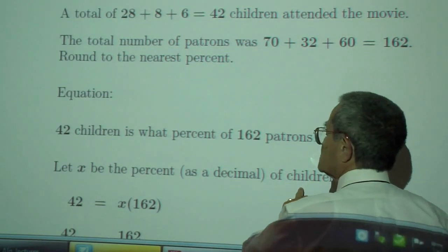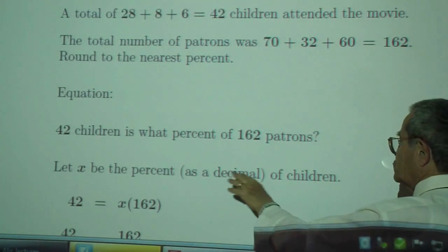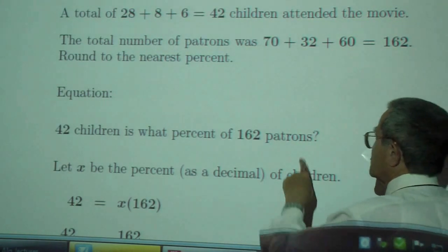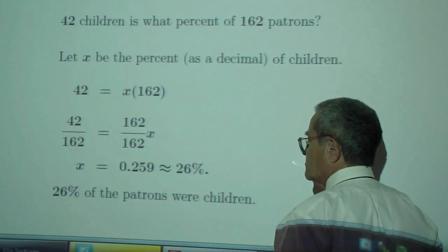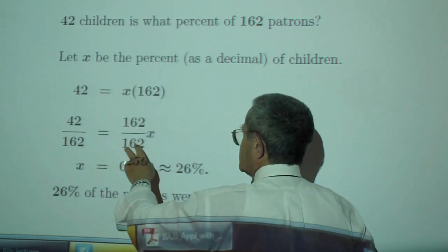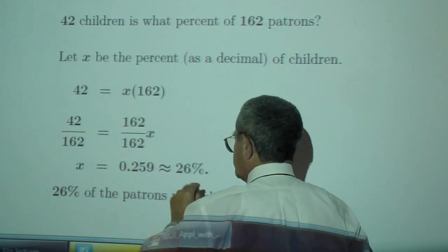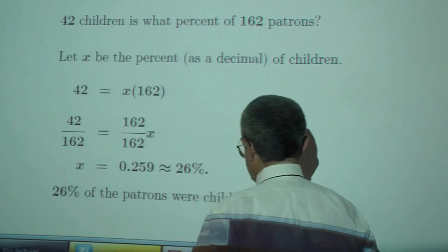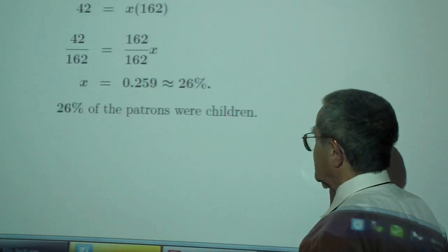That should be patrons right here. Let X be the percent of the children. Then the patrons is 162. So 42 equals 162X. Divide by 162, X is about 26%. About 26% of the patrons were children.